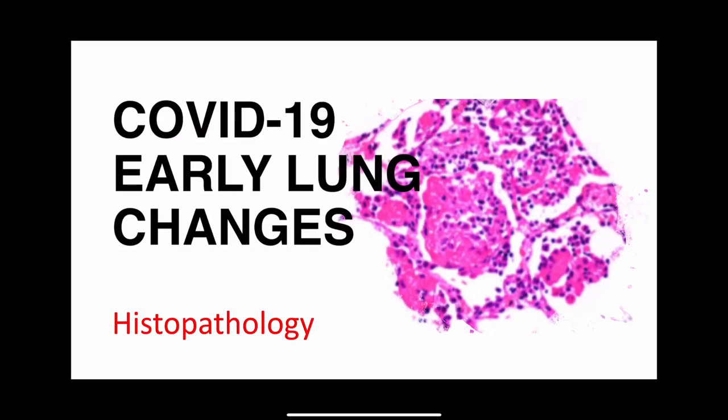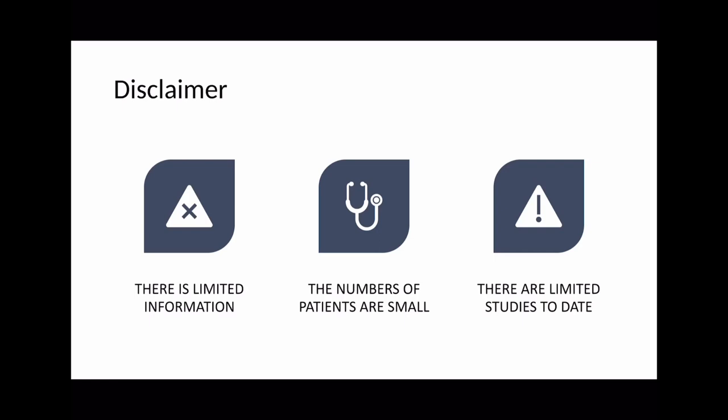Welcome to another EdgyMed video. In this video we'll be talking about the histological changes occurring within the lungs in COVID-19 infected patients. A couple of disclaimers before we start. The first is that this is very early on in the disease process and we don't have a lot of data available to us. Certainly over the next few months and years we'll get a much better idea of what the histopathological changes in the lungs are and what they mean for the disease process itself.